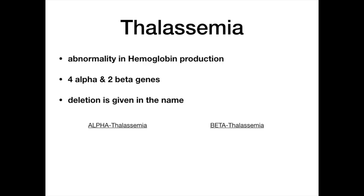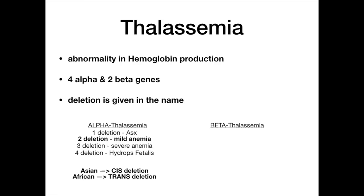Thalassemia has historically given everyone nightmares — it's not fun to learn, but spend time on it. Thalassemia is an abnormality in hemoglobin production. There are four alpha genes and two beta genes. Alpha thalassemia means an alpha gene was deleted; beta thalassemia means a beta gene was deleted. One alpha gene deletion: asymptomatic. Two alpha gene deletions: mild anemia — the one most commonly tested on boards. Three deletions: severe anemia. Four deletions: hydrops fetalis, incompatible with life.